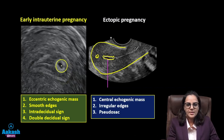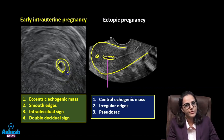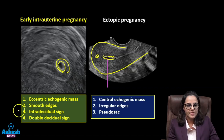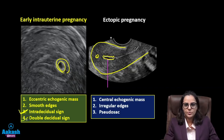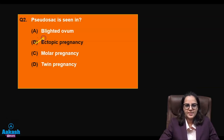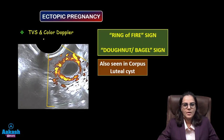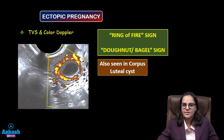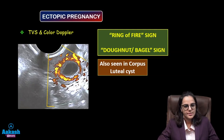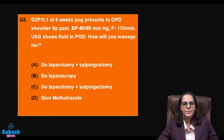Had it been a normal pregnancy, the mass would be eccentric with smooth margins. The first sign seen in an intrauterine pregnancy is the intradecidual sign, followed by the double decidual sign. Ectopic pregnancy is the answer. Another sign commonly seen in ectopic pregnancy is the ring of fire, also called the donut or bagel sign — this sign is also seen in a corpus luteal cyst.